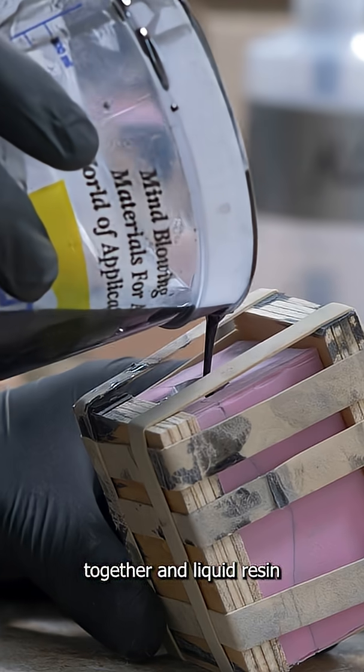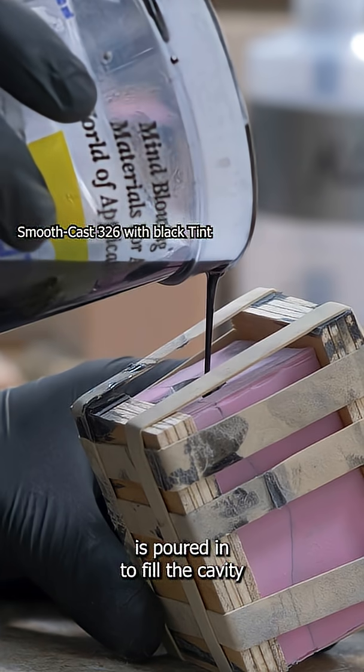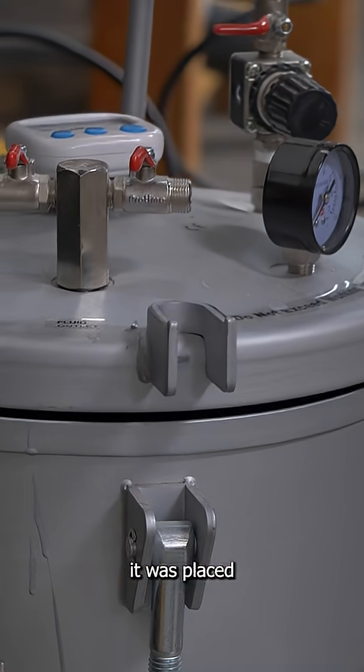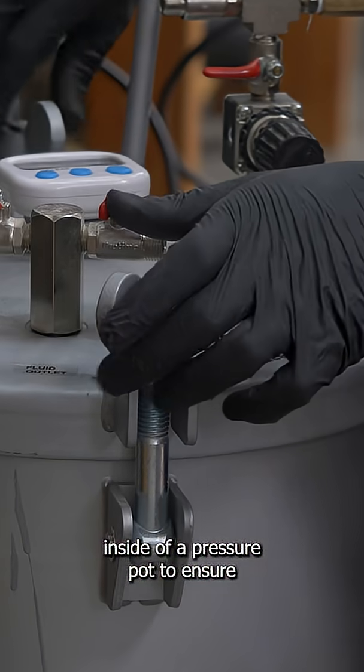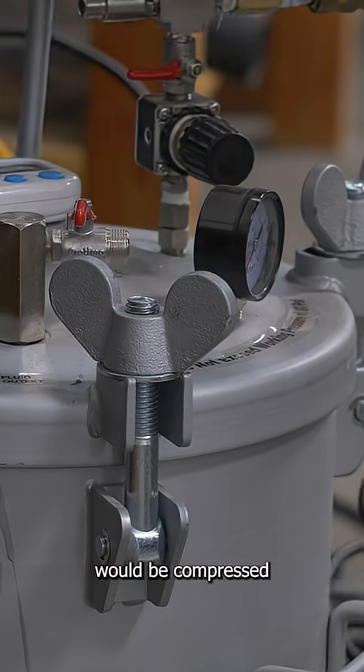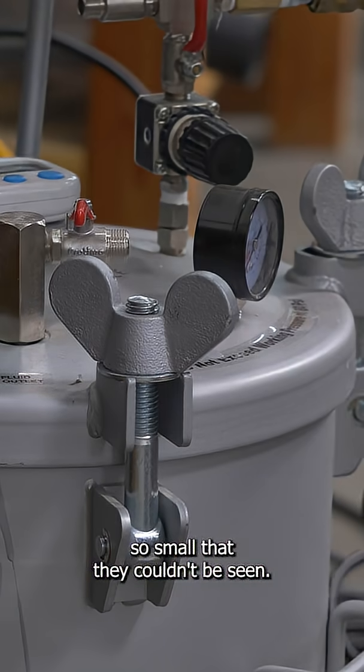Then the mold was clamped together and liquid resin is poured in to fill the cavity. While that resin was still liquid it was placed inside of a pressure pot to ensure that any remaining bubbles would be compressed so small that they couldn't be seen.